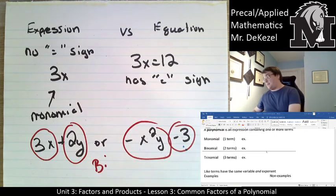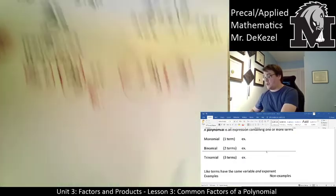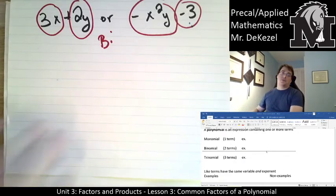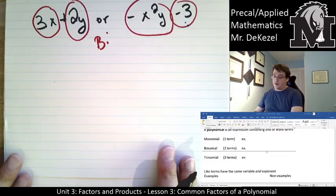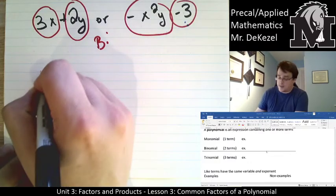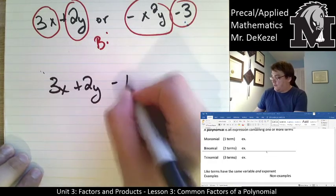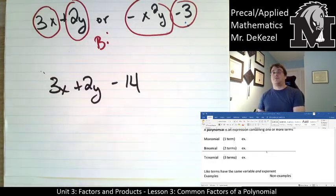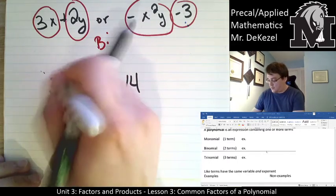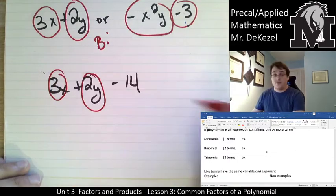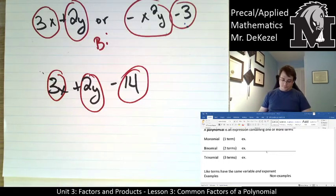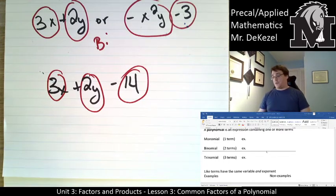There is the next type as well — trinomials. A trinomial has three portions, so like 3x plus 2y minus 14. It has three parts to it. Each part is broken up by a plus or a minus sign. You can have more than that — if there are four terms, we just call it a polynomial after that.